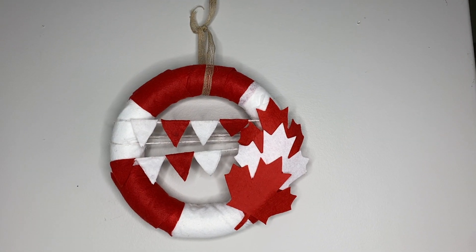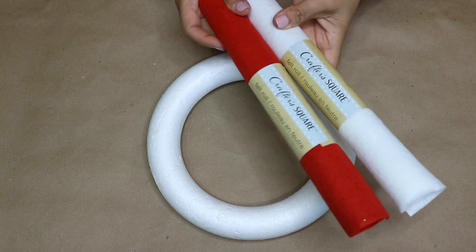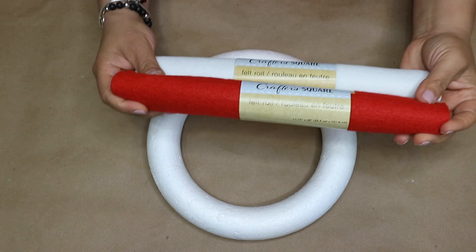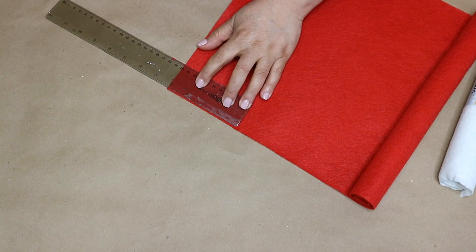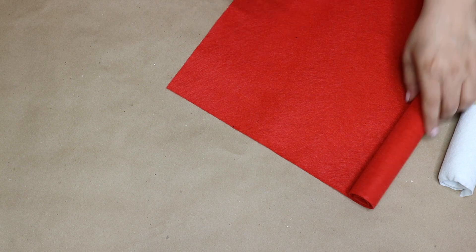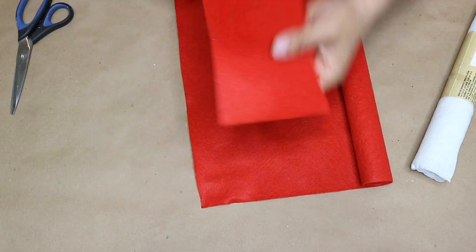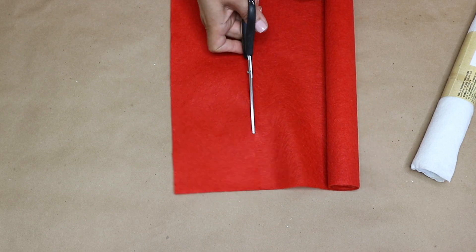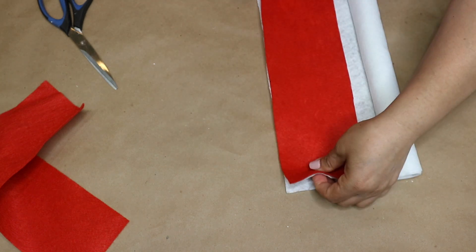Next project I am using this foam wreath from Dollar Tree. Also I am using some of these red and white felt rolls that I got from Dollar Tree as well. So what I'm gonna do here is that I will measure about four inches wide and I cut out a few strips same size. So here I have two strips of each color and I will need one more of each color as well.